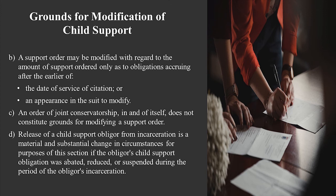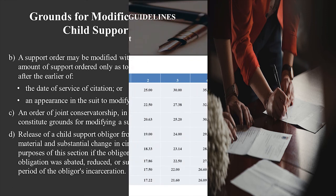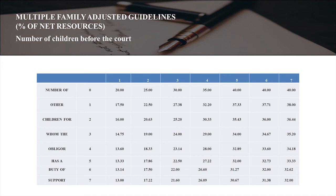If you file a modification and it's contested and the court will not give you temporary orders to increase child support temporarily, then the obligor can have an obligation that goes back to the filing of the modification, with a payout going forward up until the trial date plus an ongoing increased child support obligation from the date of that final order forward. When you file a modification, the court can also look at whether there are more children that the obligor may have an obligation to provide for.